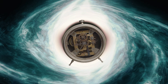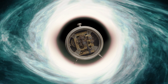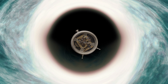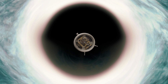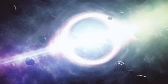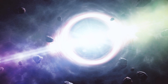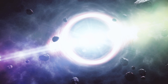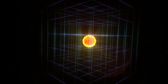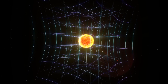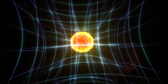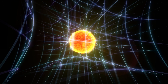For example, if you were to observe an object falling into a black hole from a distance, you would see the object's clock appear to slow down as it gets closer to the black hole. This is because the object's time is passing more slowly due to the warping of spacetime caused by the black hole's gravity. Gravitational time dilation is a consequence of Einstein's theory of relativity and has important implications for our understanding of the nature of time and the behavior of objects near black holes.